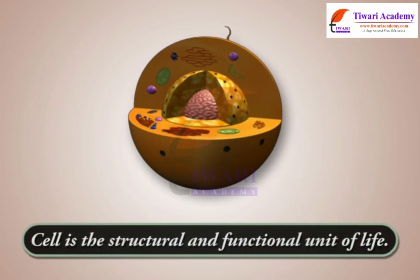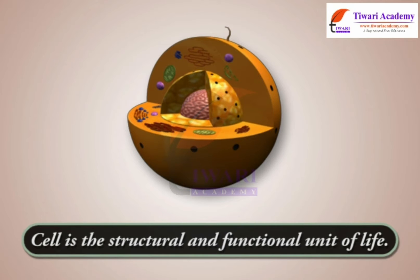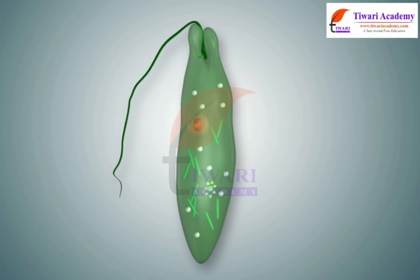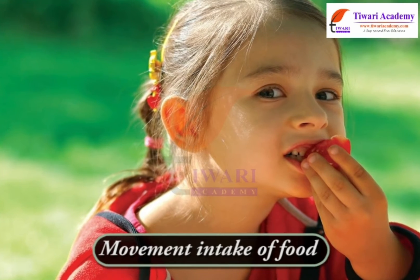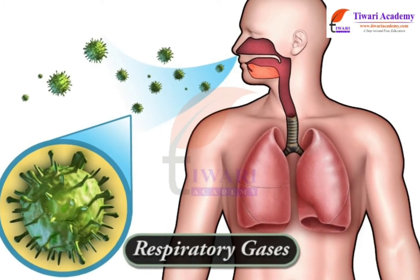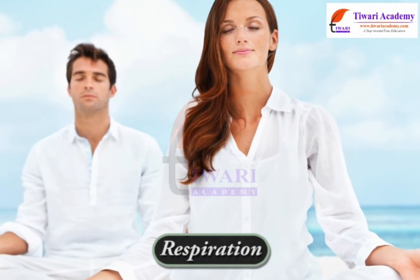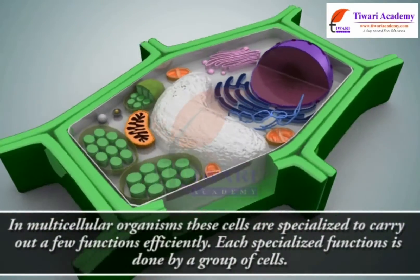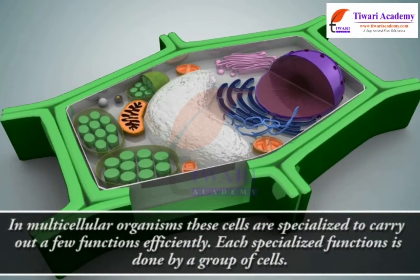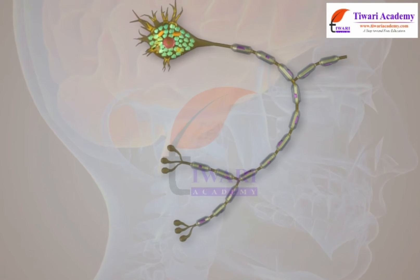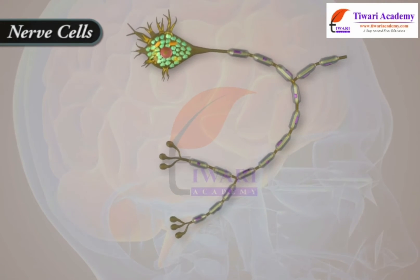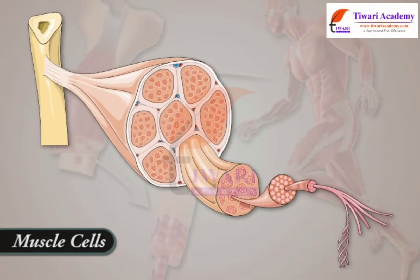The cell is the structural and functional unit of life. A single cell of a unicellular organism can perform all basic functions of life, such as movement, intake of food, and respiration. In multicellular organisms, cells are specialized to carry out a few functions efficiently, and each specialized function is done by a group of cells. For example, nerve cells carry messages from the brain to every part of the body.